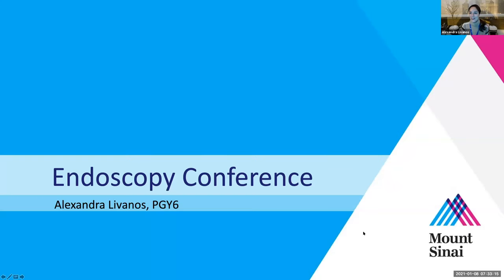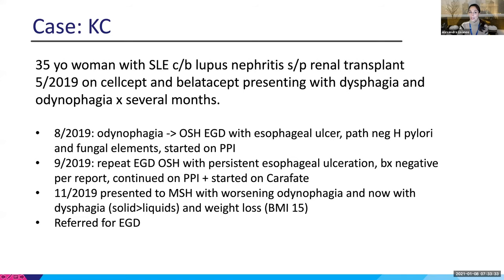Good morning, everyone. I'm going to tell you about a case which may be familiar to some people, but not all of you, and I'll tell you what happened and what the diagnosis ended up being. This is a 35-year-old woman with lupus complicated by lupus nephritis who had a renal transplant in May of 2019. She's on CellCept and belatacept, and she's presenting with dysphagia and odynophagia for several months.